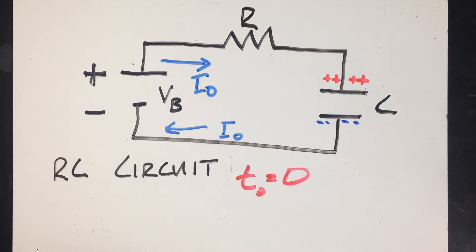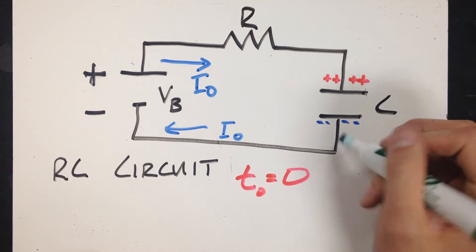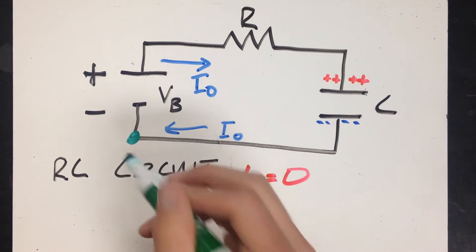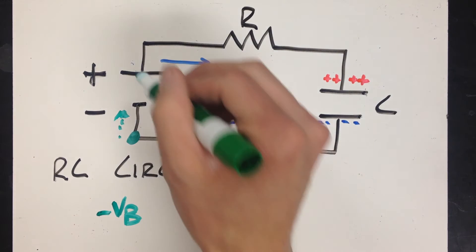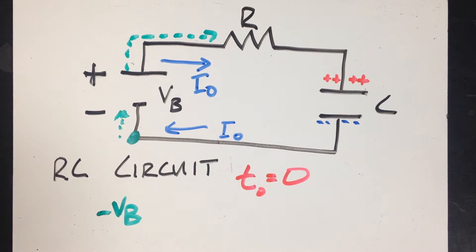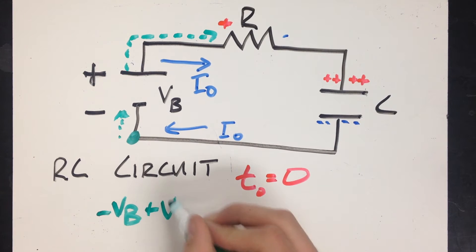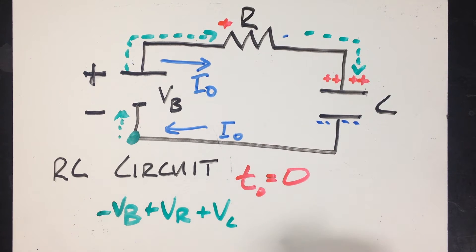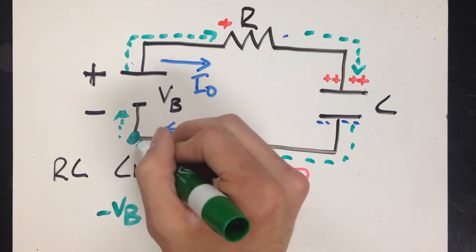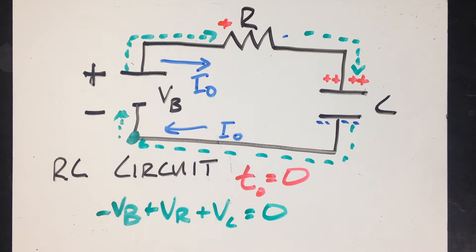So we can get a function of how that current is going to change over time. To start, I'm going to look at the loop rule. Going around the loop, I hit the negative terminal of my battery, so negative V_B. Then I keep going and hit the positive side of my resistor, so I mark that as plus V_R. Keep going and I hit the positive side of my capacitor. Once I get back to where I started, I write equals zero.